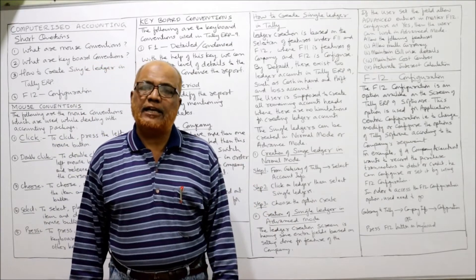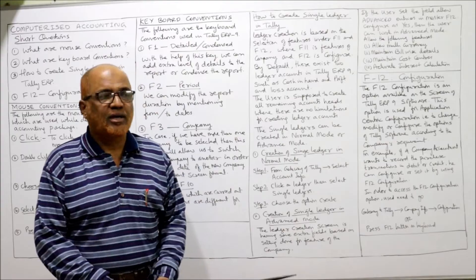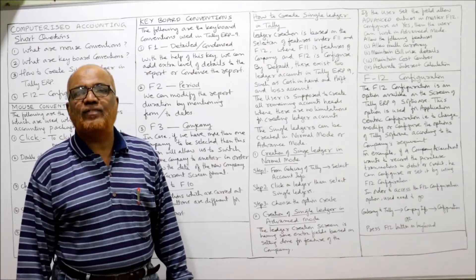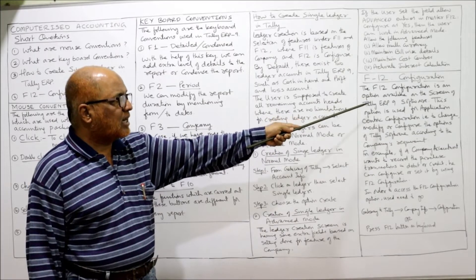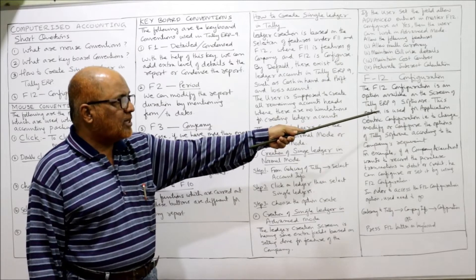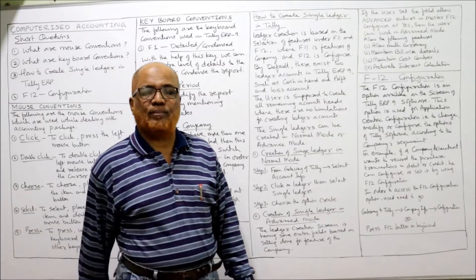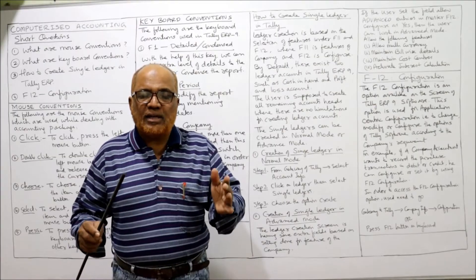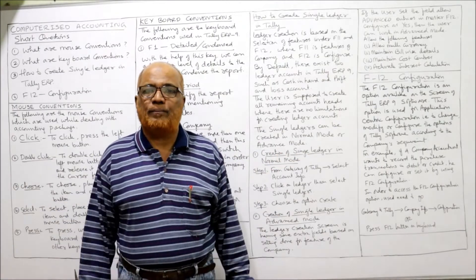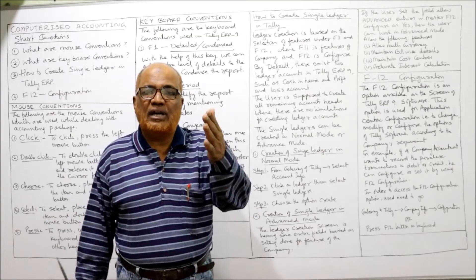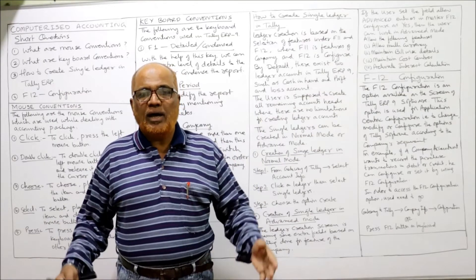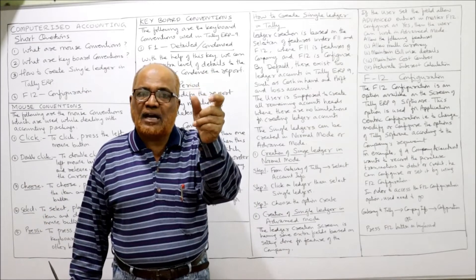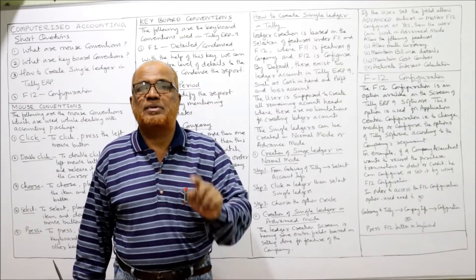This is the explanation regarding how to create a single ledger in the Tally ERP package — a very frequently asked examination topic. Next is F12 configuration. The F12 function key is for configuration. F12 configuration is an option available on the Tally ERP 9 screen and is used for application-centric configuration. Every company has different requirements — the accounting system will not be the same for every company.